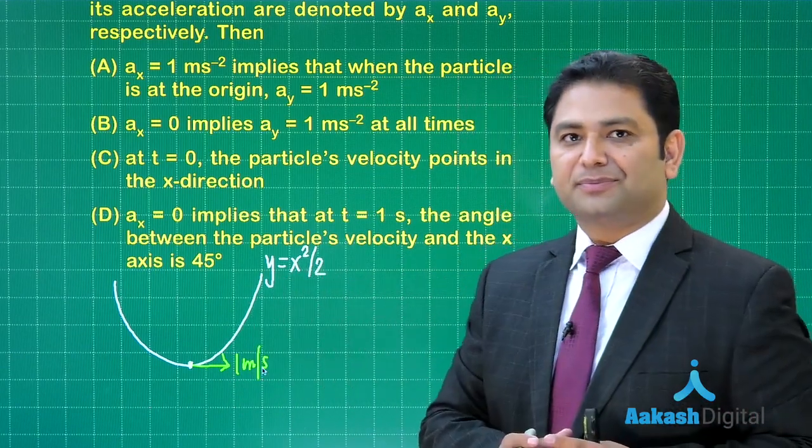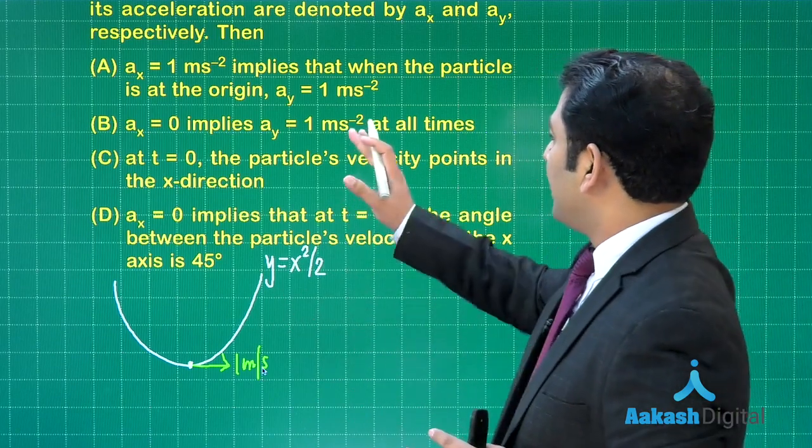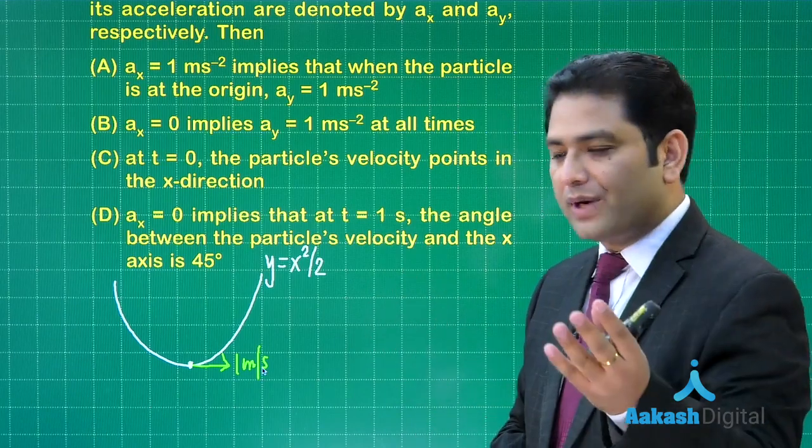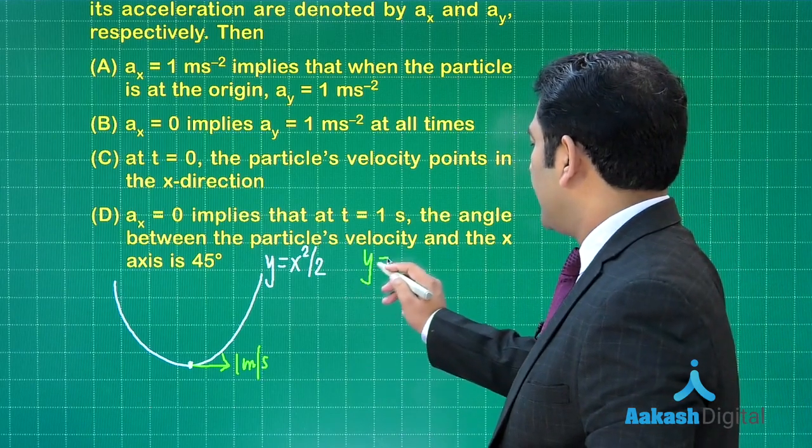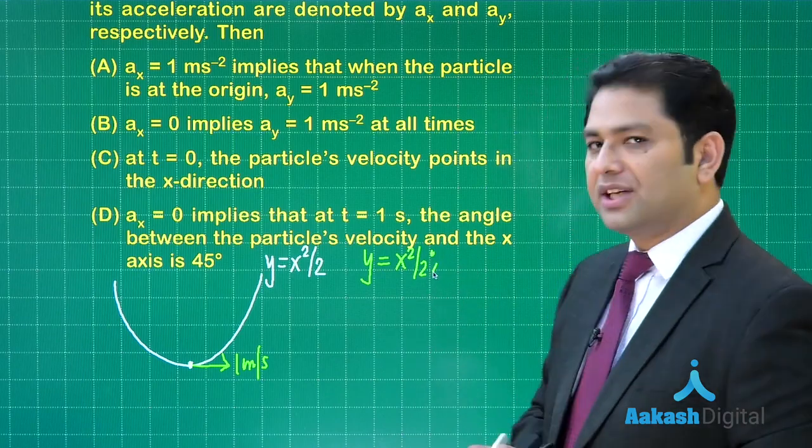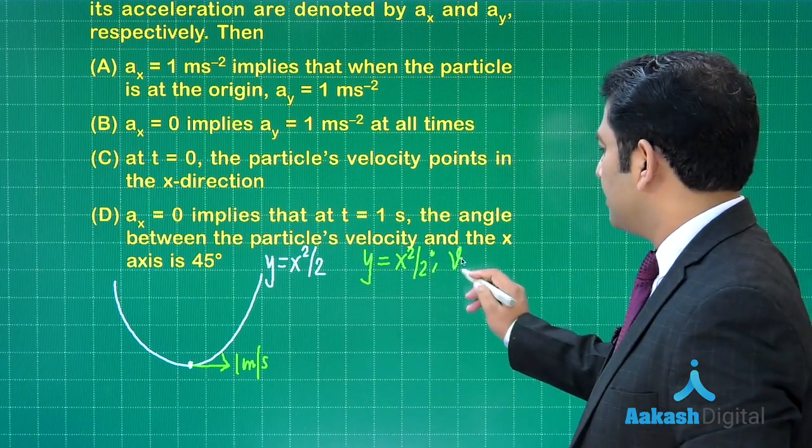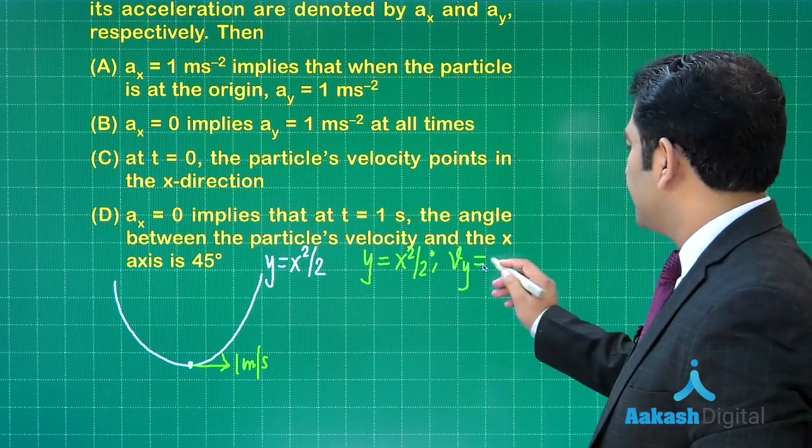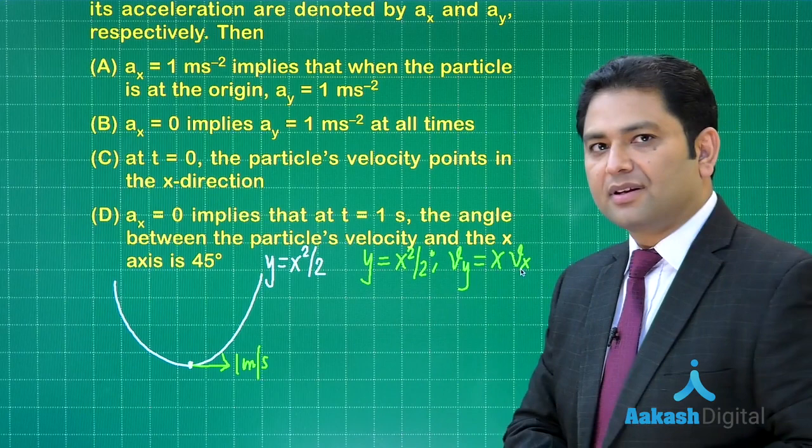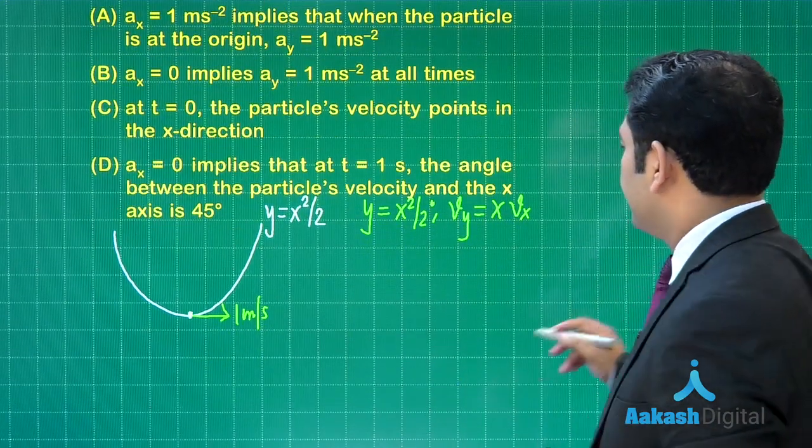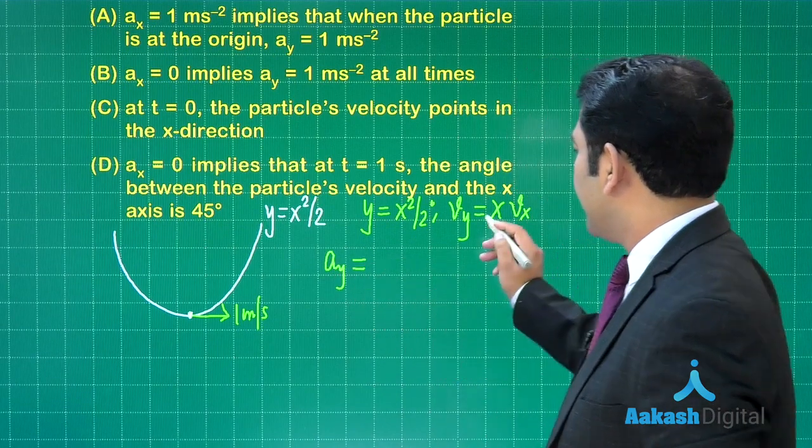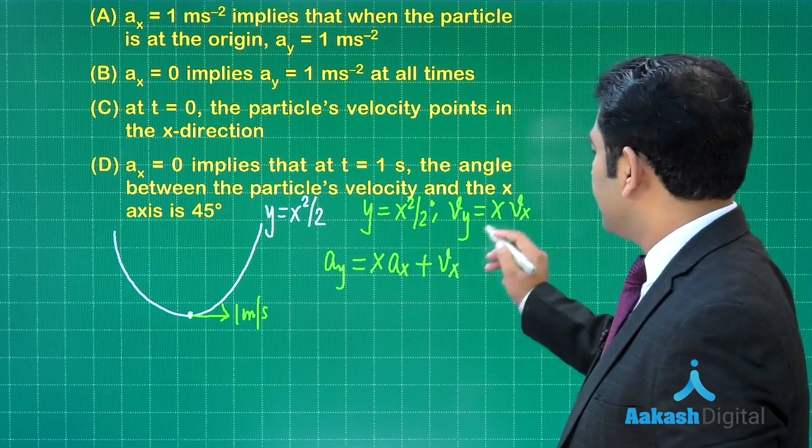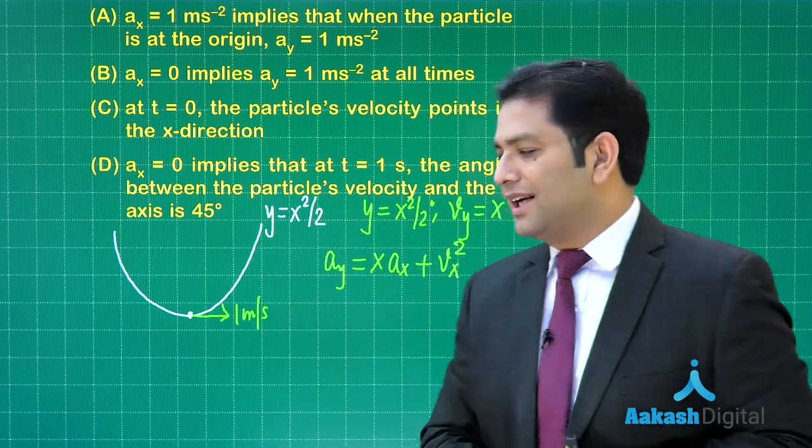At t equals zero, let's verify the first option: if ax is 1, then when the particle is at origin, ay is also 1. Let's verify: y equals x squared by 2. Differentiating with respect to time: vy equals 2x times dx/dt, which is x times vx. Further differentiating: ay equals vx times ax plus x times vx squared, using the product rule.